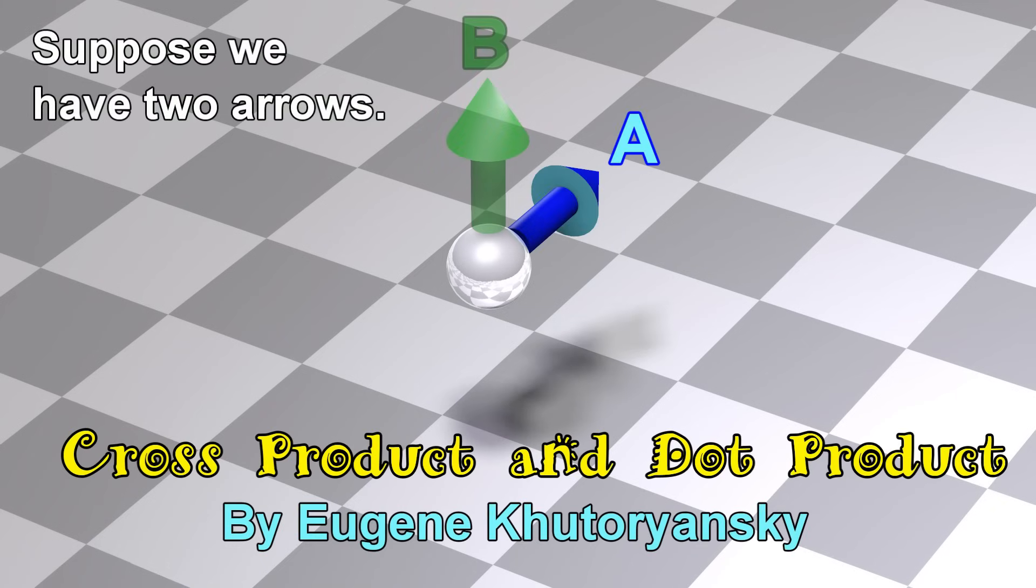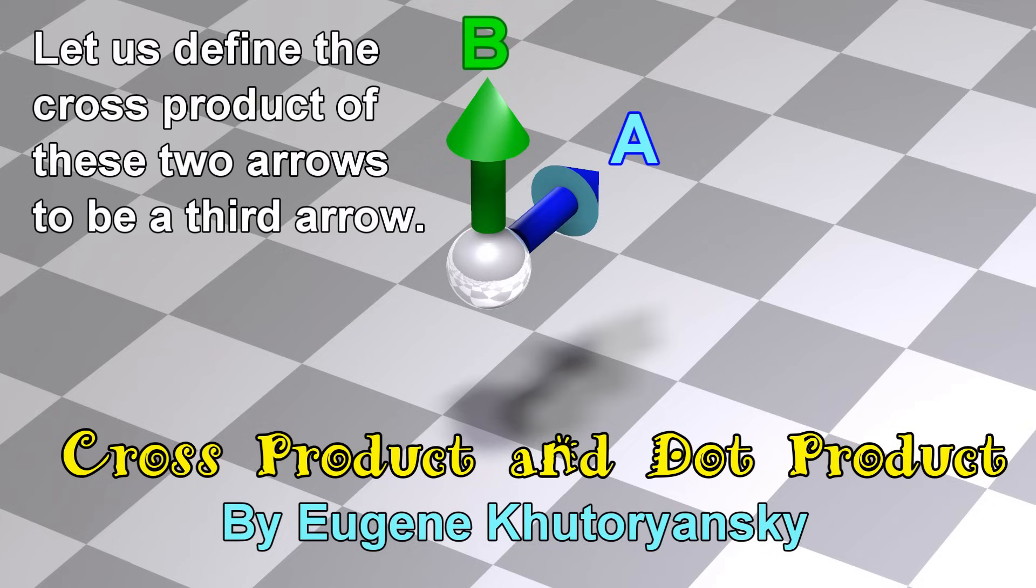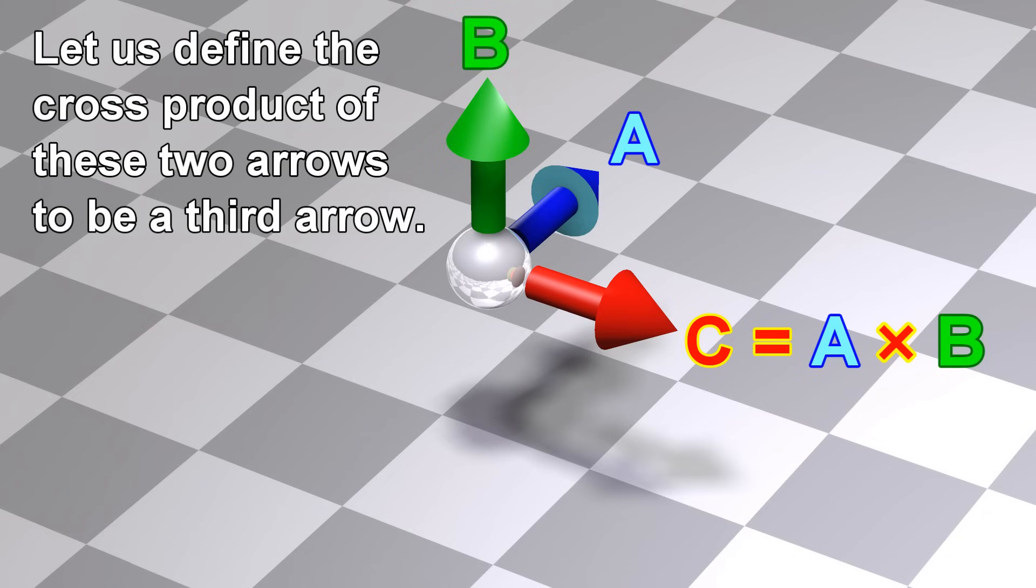Suppose we have two arrows. Let us define the cross product of these two arrows to be a third arrow.